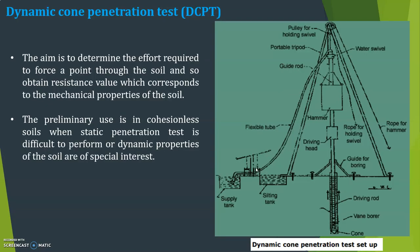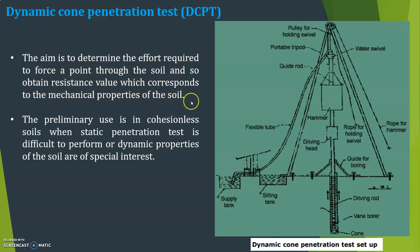Let us now discuss the dynamic cone penetration test (DCPT). The test setup includes a pulley for hand holding swivel, portable tripod, guide rod, water swivel, rope for hammer, driving head, hammer, flexible tube, silting tank, supply tank, driving rod, vane holder, and cone. The aim is to determine the effort required to force a point through the soil and obtain resistance values corresponding to the mechanical properties of the soil. It is primarily used in cohesionless soils when static penetration test is difficult or dynamic properties are of special interest.